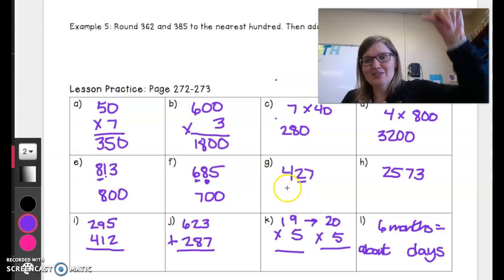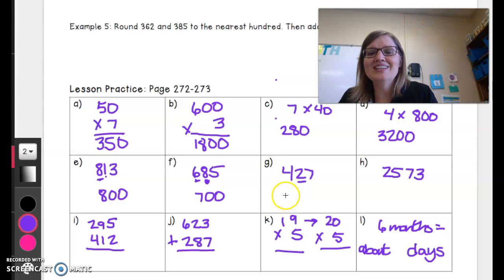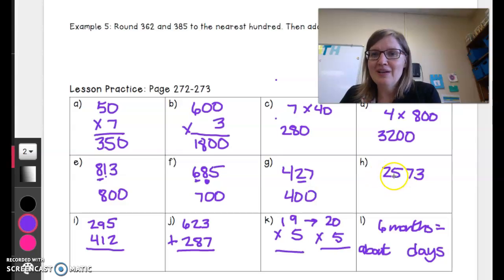This one is trickier because it's 2,575. I need to pay close attention to where everything is in regards to place value. So they want the nearest hundred. Tens, hundreds. I look at my 5.